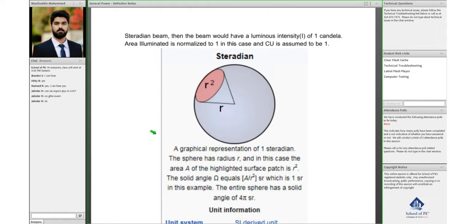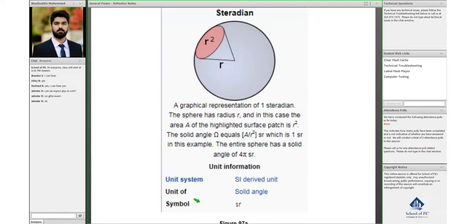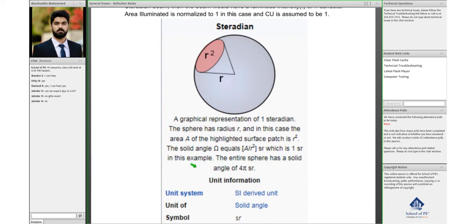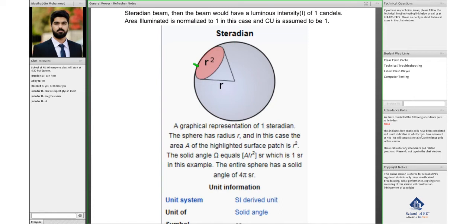It produces a luminous intensity of one candela and the area would be one. It's represented by SR, the symbol for steradian. For example, if you have a light fixture with radius R, it would produce illuminance.